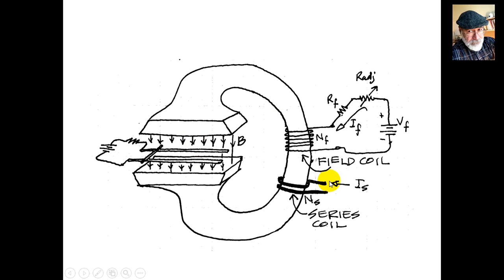Sometimes we use a second coil, called the series coil, with number of turns NS and resistance RS. The field coil has number of turns NF and resistance RF.